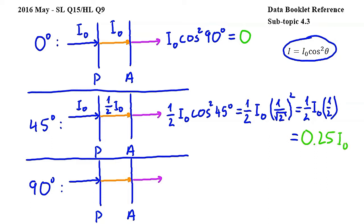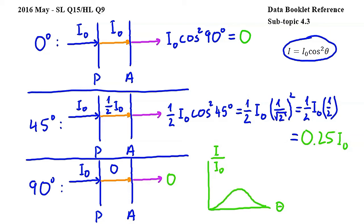From this, we can already deduce that the correct answer is B, but let's see what happens when theta is 90 degrees. The intensity of light entering P is I0, but since the light is horizontally polarized and the polarization axis of P is vertical when theta is 90 degrees, there will be no light emerging from P. The intensity will be 0, so the intensity of light emerging from A will also be 0. Sketching the graph of intensity versus theta, it starts from 0, goes up to 0.25 I0, and then goes back down to 0. Therefore, the answer to this question is B.